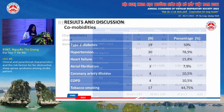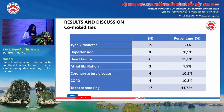Hypertension is the most common comorbidity in our study, accounting for 78.9% of the study group. Other studies in Vietnam record the prevalence of hypertension in the group of patients with obstructive sleep apnea syndrome at 35 to 50%.